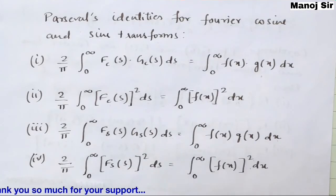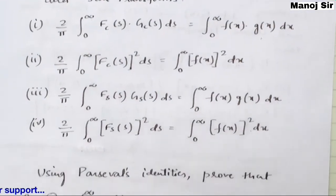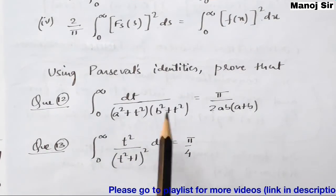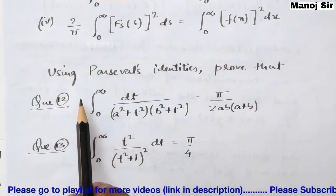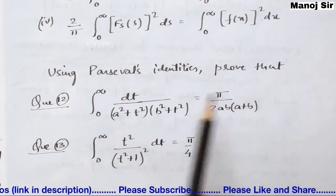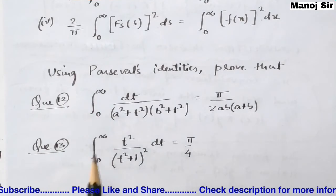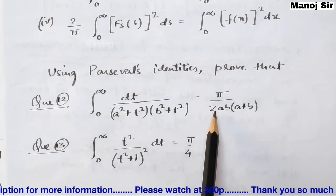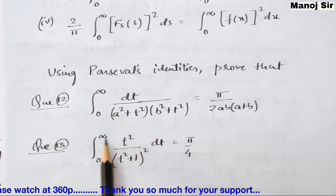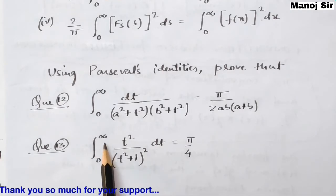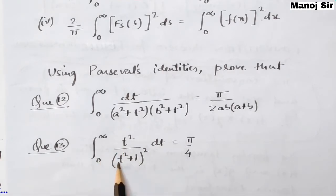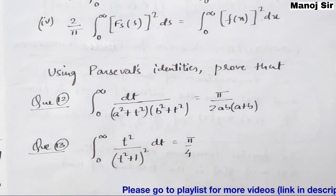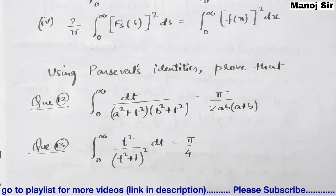We are going to solve two very important problems using Parseval identities. The first: prove that ∫₀^∞ dt / [(a² + t²)(b² + t²)] = π / [2ab(a + b)]. The second: prove that ∫₀^∞ t² / (t² + 1)² dt = π/4. Both questions are very important.